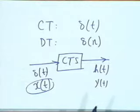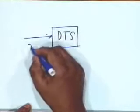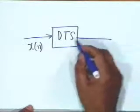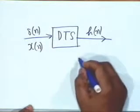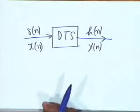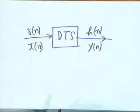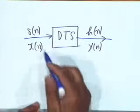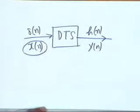In a similar manner, for a discrete-time system, if you know the output h(n) due to an excitation which is a unit impulse function delta(n), then you can find out the output due to any arbitrary signal X(n). This theorem will be true if you can decompose the given signal X(n) in terms of elementary signals delta(n).